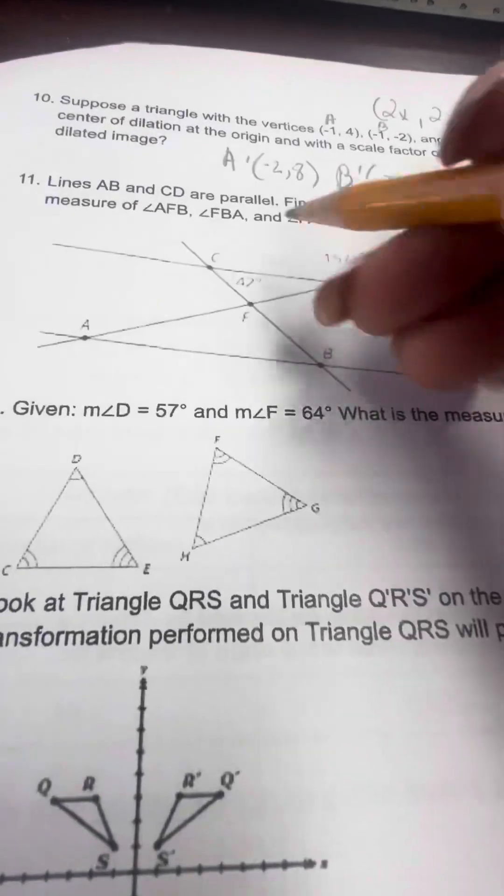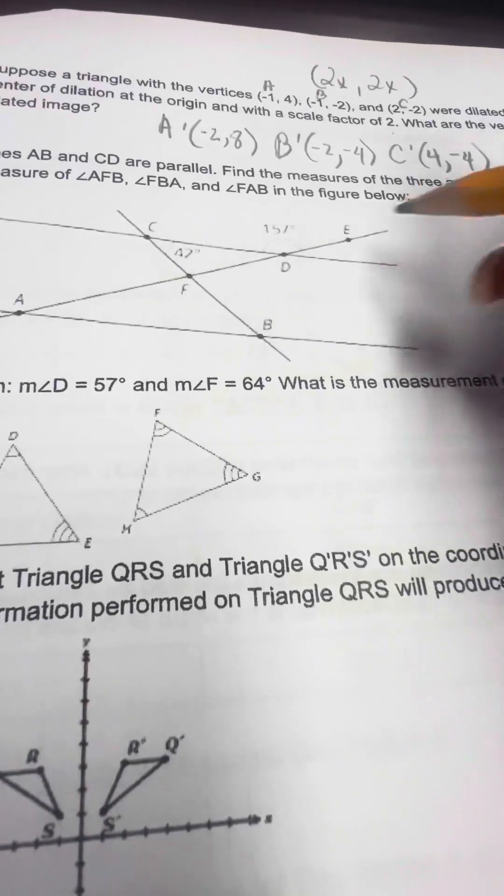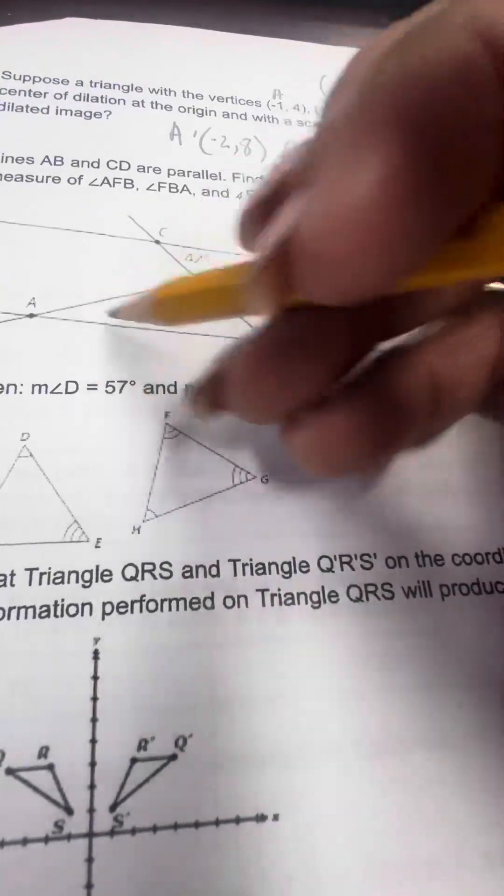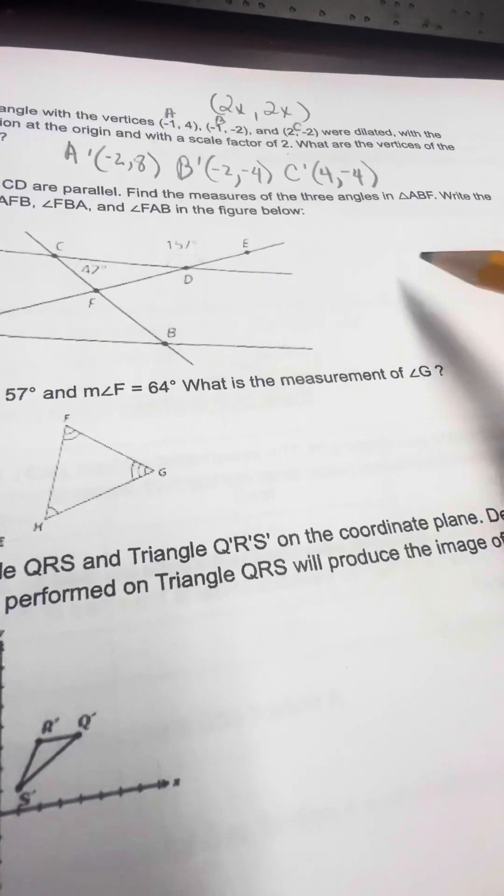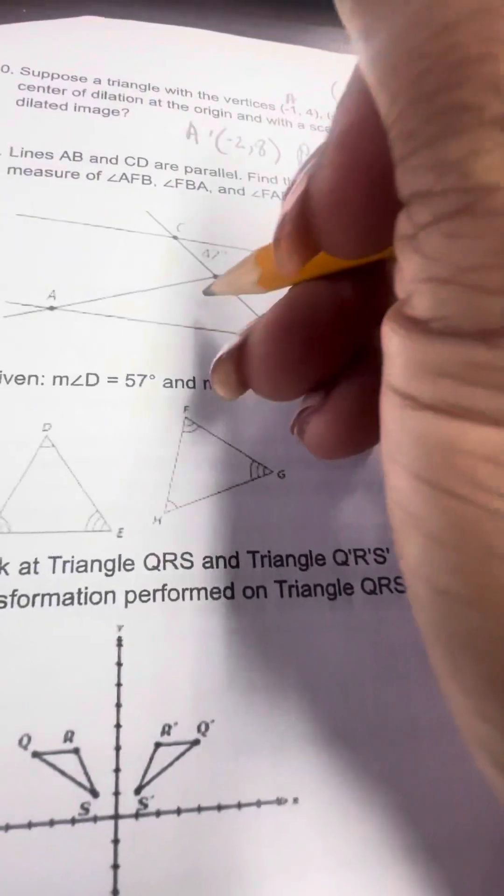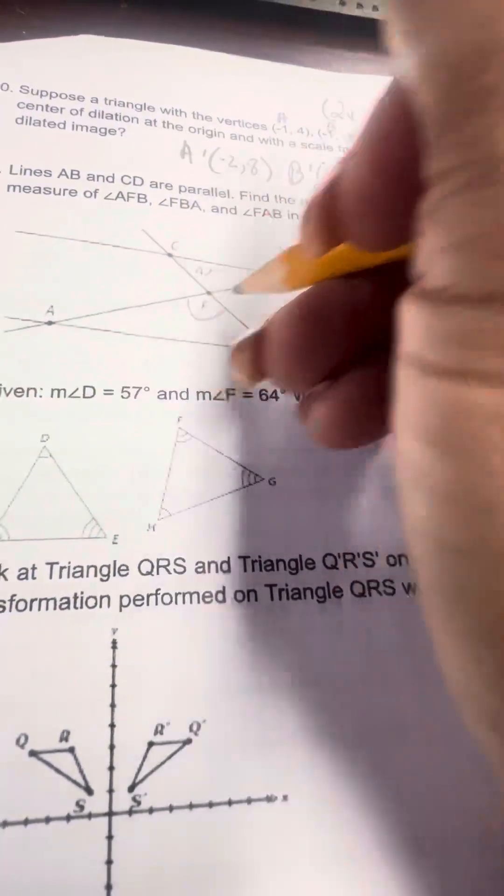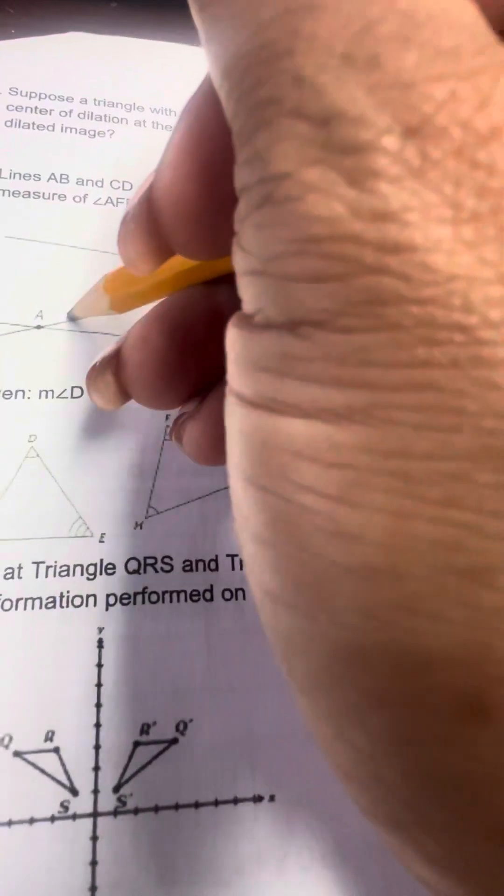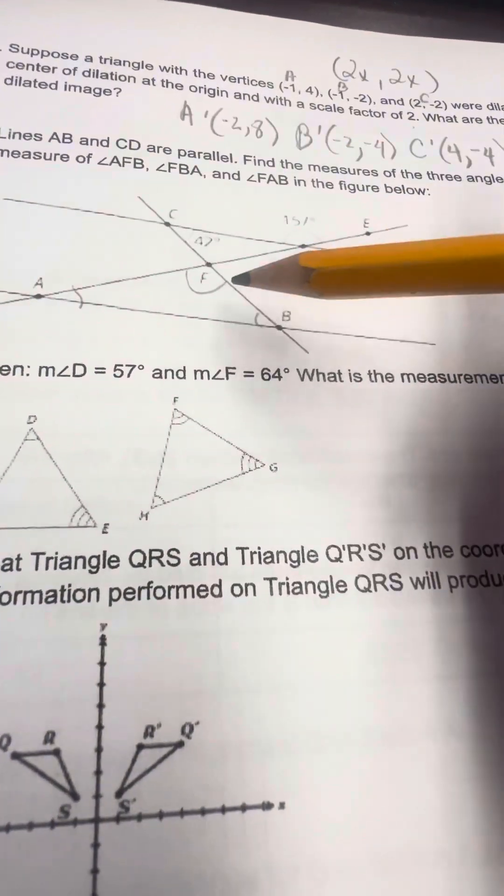For number 11, you have these lines, and they're parallel. That means they're going in the same direction, they do not intersect. Find the measure of the three angles. So you want to find the measure of this angle, this angle, and this angle.